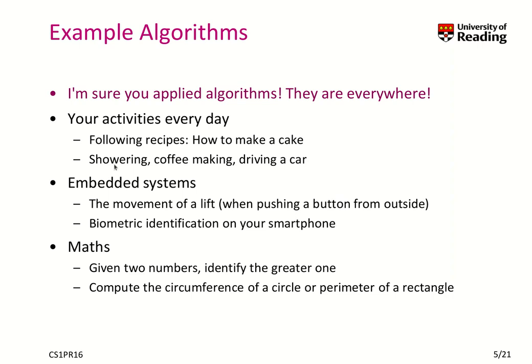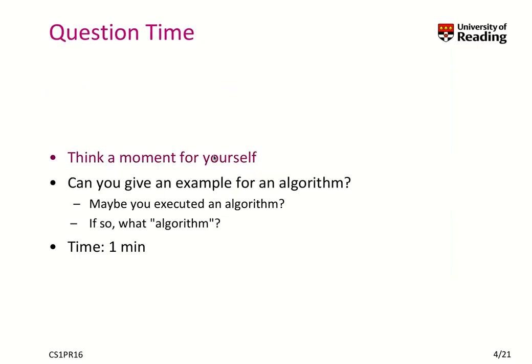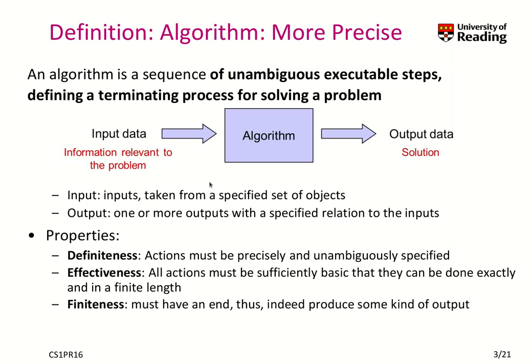Basically, let's take the example of a cake. You take as an input the description of how to make the cake together with all the ingredients. You run the algorithm, which is basically encoded in this description — as a human you would run this description. And as an output, you basically get the tasty cake, I hope.